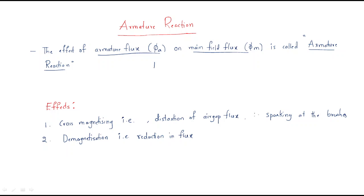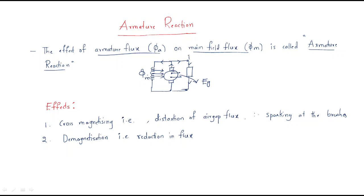In DC generators, consider the example of a DC shunt generator. If the load is connected, the main field induces EMF in the armature, then armature current flows through the field and the load. In every generator action, armature current also produces armature flux.